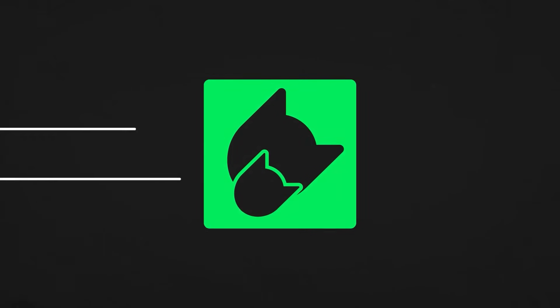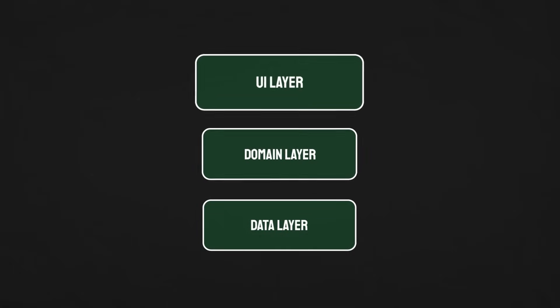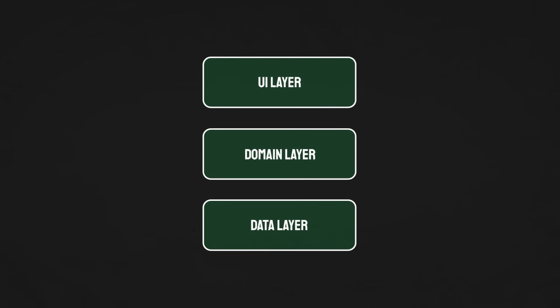What you initially really have to understand — and this is the most important thing — is that all different architectural styles out there all have the same goals. On the one hand, they want you to structure your classes, files, and functions in a way that is consistent. So if you have a certain structure for feature A, then you can also expect to have that same structure for feature B. The second goal is that the architecture should make your project easier to maintain, so it's easier to make changes.